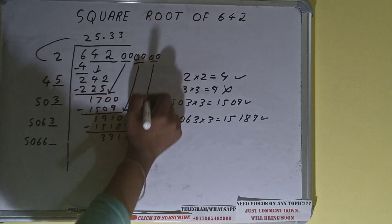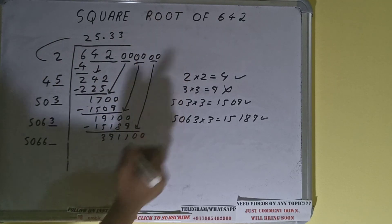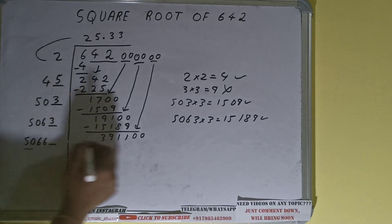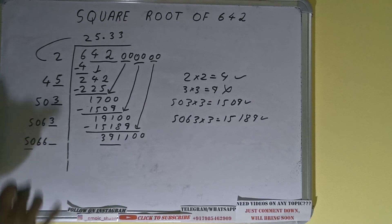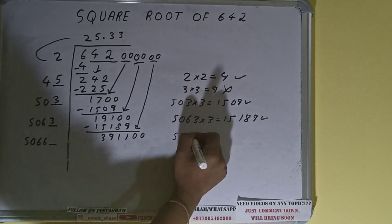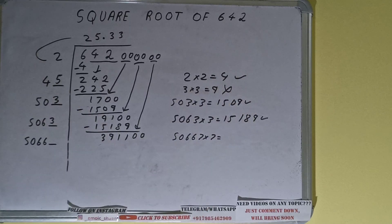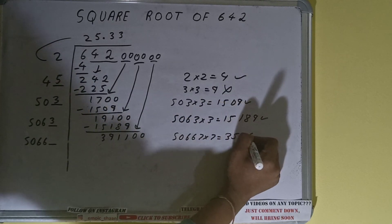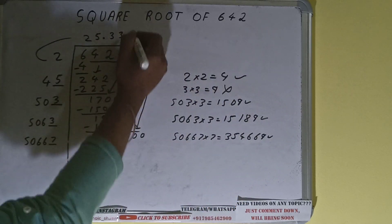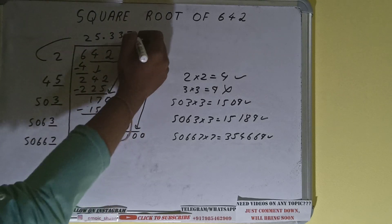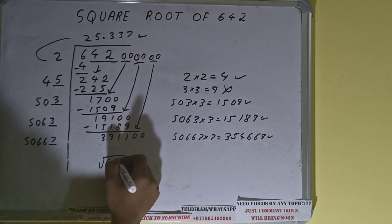Keep 1 digit extra. This number we need to make bigger, so bring the next pair of zeros down and it will become 391,100. Compare 50 with 391 — 58 times is 400, so we cannot try 8 times; we have to try 7 times. So 50667 into 7 will be 354,669. That is good to take, so 7 here and 7 here. We don't need to calculate further because we got the answer correct up to 3 decimal places.